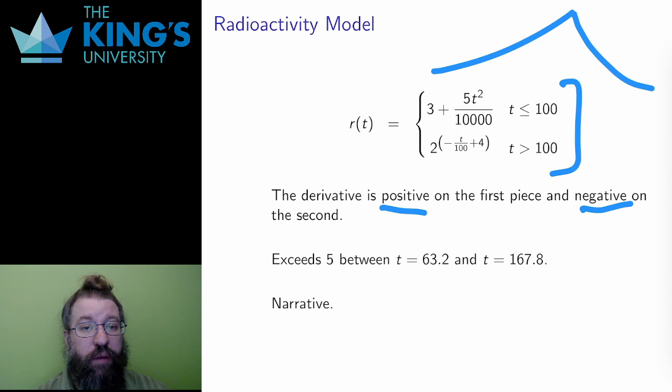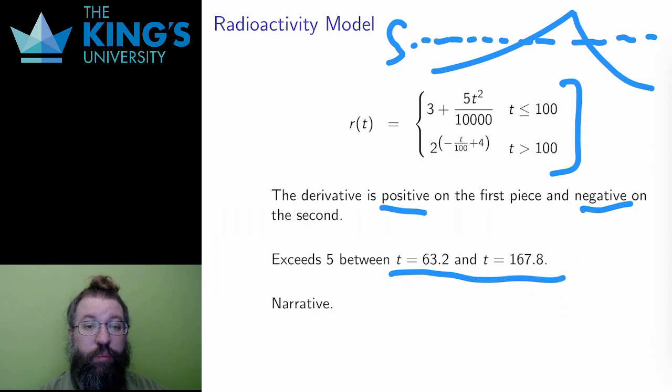For some measurement of safe, a site can be considered unsafe if the radioactivity is above 5 grays. I can calculate when this happens. In approximate value, this happens between t equals 63.2 and t equals 167.8. So by this judgment, the site is unsafe after 63 years, and it remains unsafe until after about 168 years.